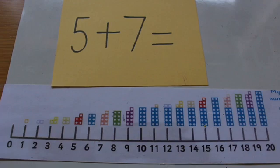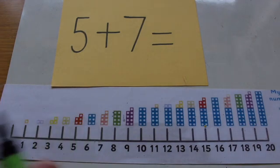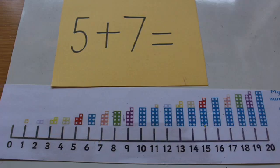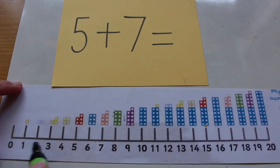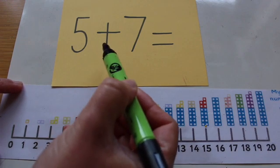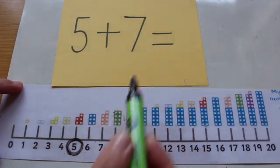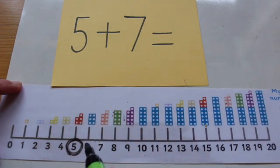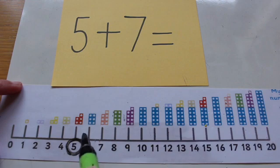Now we have the question 5 add 7. Where do you think I'm going to start on the number line? Yes, I need to start on the first number, so I go 0, 1, 2, 3, 4, 5. I put a circle around the 5, and it wants me to add 7, so I'm going to do 7 jumps forwards.